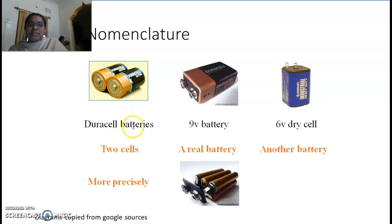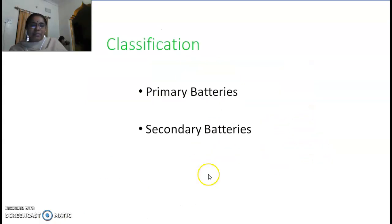These are Duracell batteries with two cells, and it is more precise. This is a 9-volt battery, which is a real battery. This is a 6-volt battery; this is another type of battery.